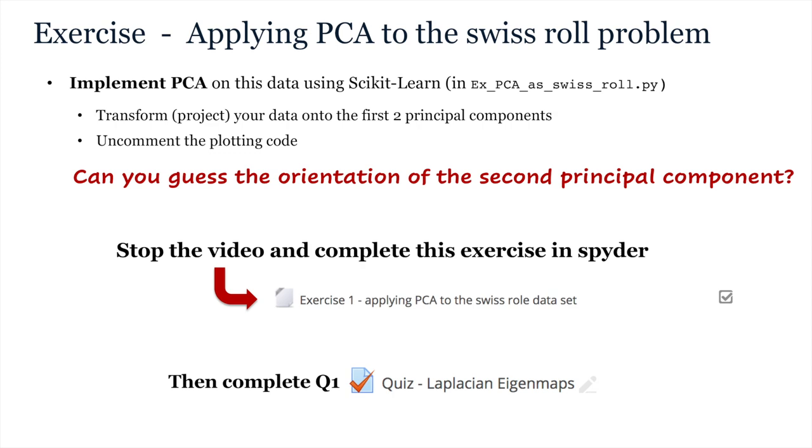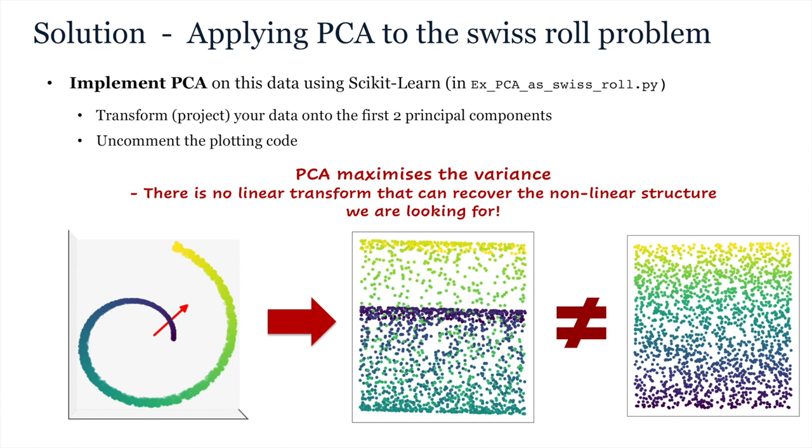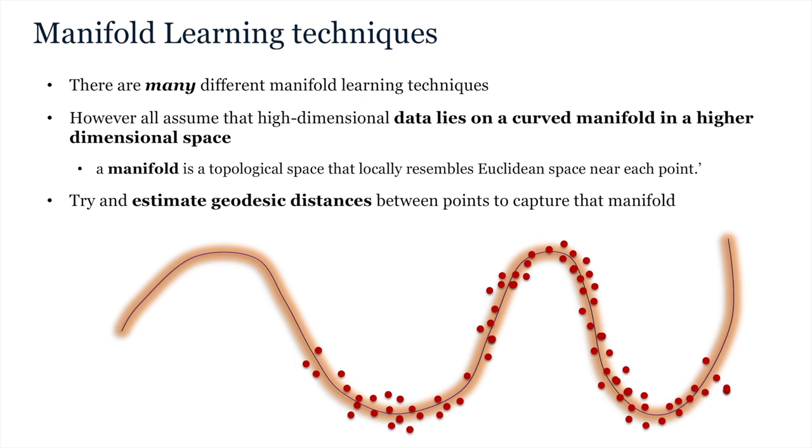So, PCA is unsuited to modelling this data as it seeks to project the data onto a new Euclidean plane under which the variance is maximised. And if we project all our data points onto that plane, then we get the following result. That is, that data points from different parts of the spiral project on top of one another. Specifically, the dark blue projects on top of the light green. This does not recover the 2D plot that we originally simulated, which is this. So, manifold learning techniques are instead trying to recover embedding, which reflects the true geodesic distances between points along the curved surface.